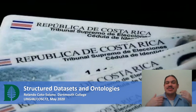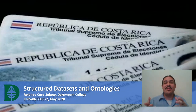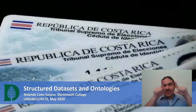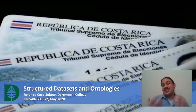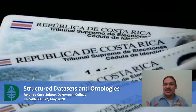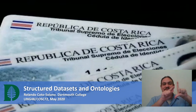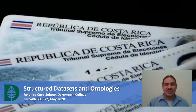In the last video we looked at a structured relational database — the entities or tables and the different attributes of the entity, or the columns. In this video we're going to abstract ourselves a little bit and try to ask: who decides what the attributes are, and what are the consequences of those decisions? We're going to talk about ontologies.